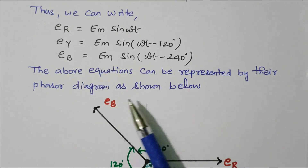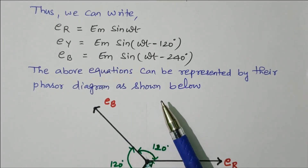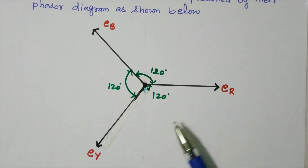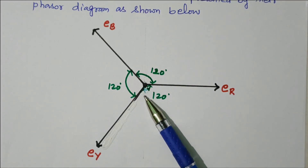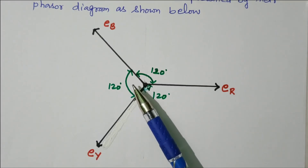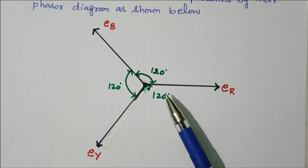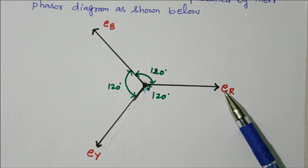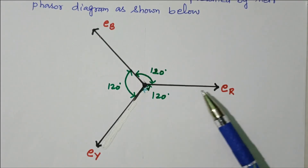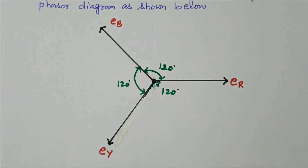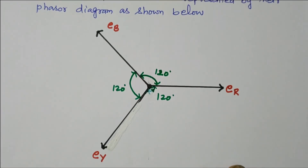The above equations can be represented by the phasor diagram shown. This shows R phase, Y phase, and B phase. Between R and Y phase there is a displacement of 120 degrees. Between R and B phase there is a displacement of 240 degrees. Each and every phase is displaced by 120 degrees from the next.